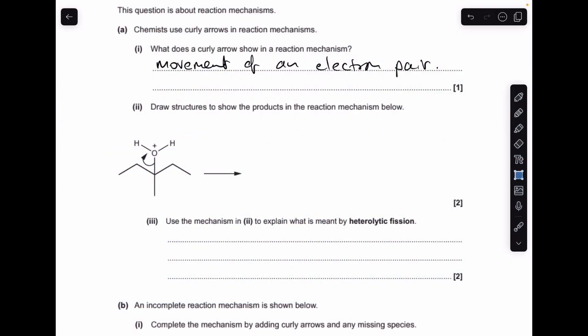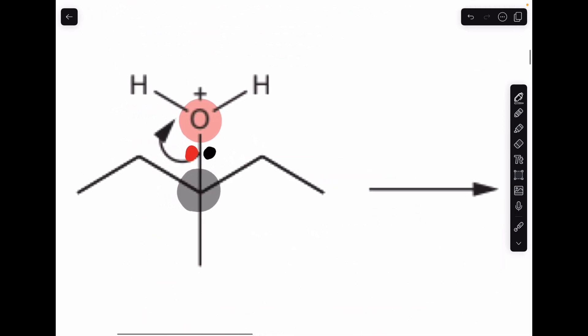So the first part of the definition for a curly arrow shows the movement of an electron pair. To help me explain this mechanism, I'll just zoom in on what I've done here. You can see I've highlighted the oxygen in red and the carbon in black, and I've drawn in the pair of electrons that are in that bond that the curly arrow is coming from.